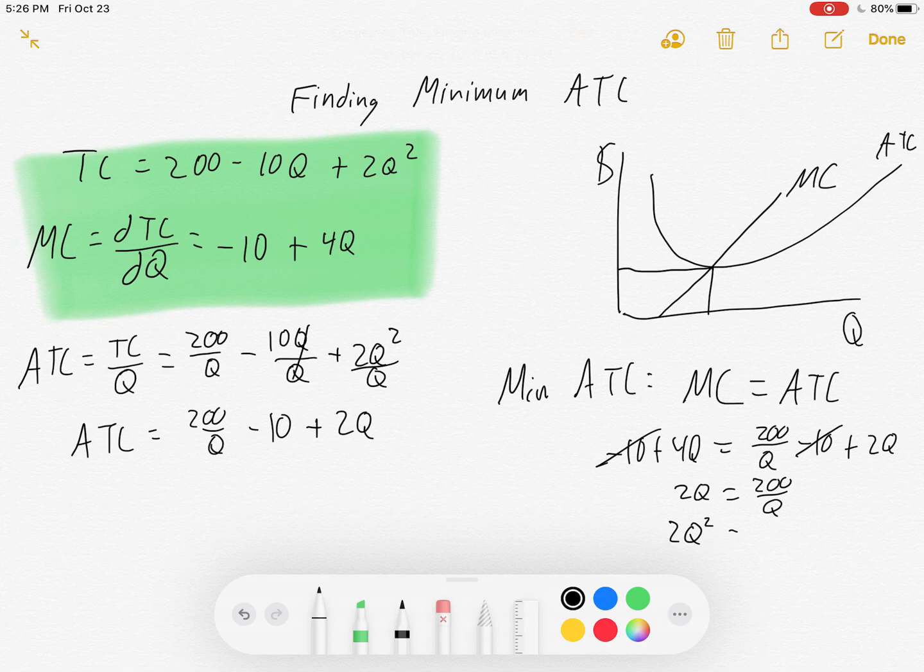Q squared, 2Q squared is equal to 200, Q squared is equal to 100, Q equals 10. Blam! There it is.